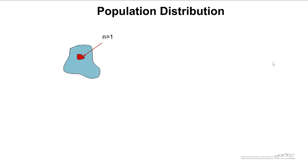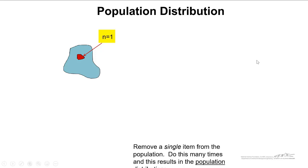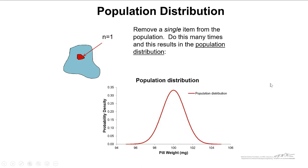A population distribution: if we took a population outlined by this blue shape here, and we took samples of size 1, n equals 1, if we did that many, many times, what would result is a population distribution. We've been talking about this for a couple of weeks now. If we took individual items and compiled a histogram and then fit that to a normal distribution, we would get this red line.